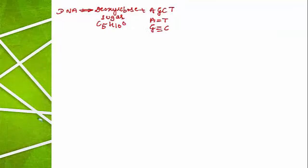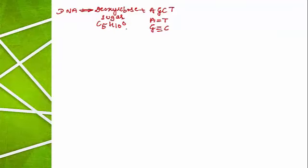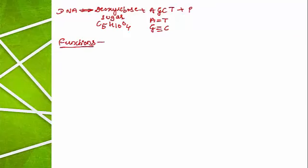The chemical formula of deoxyribose sugar is C5-H10O4, and the number of oxygen atoms is four. Adenine, guanine, and cytosine are the nitrogen bases. The phosphate group is responsible for the negative charge exerted by the DNA molecule.